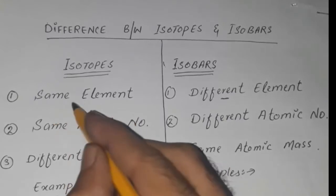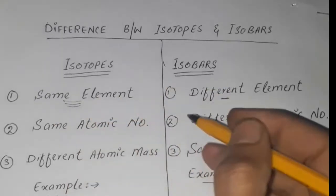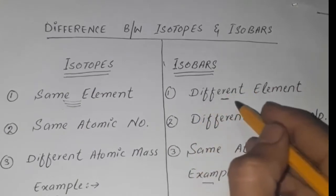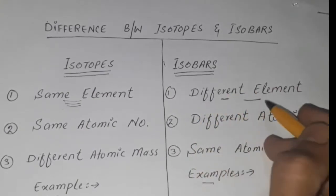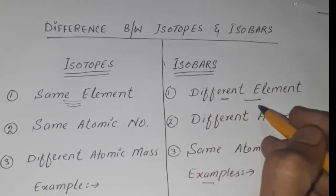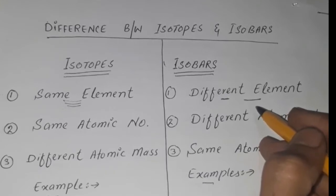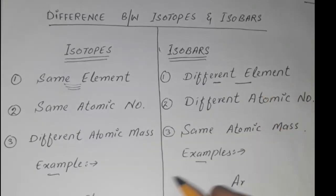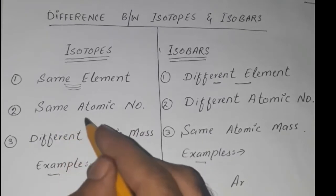Atoms of the same elements versus atoms of different elements. Isotopes have the same atomic number.